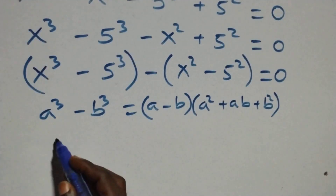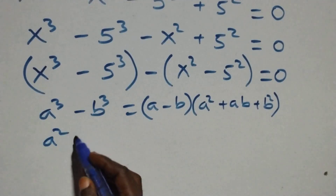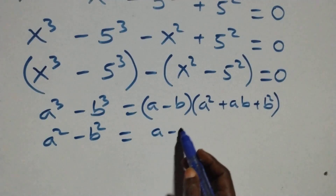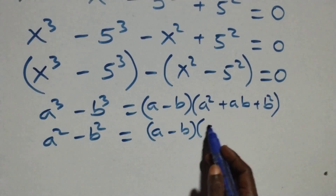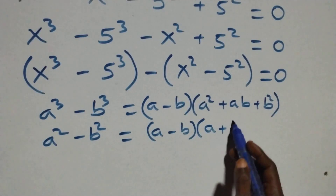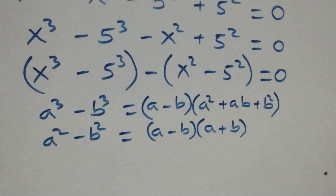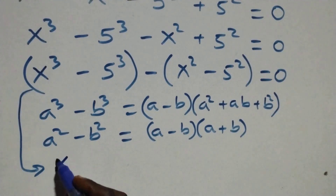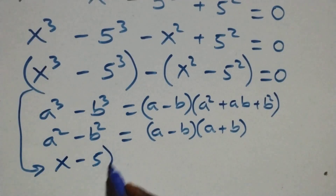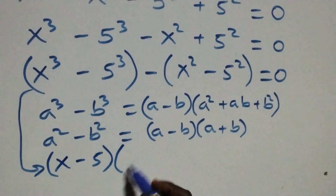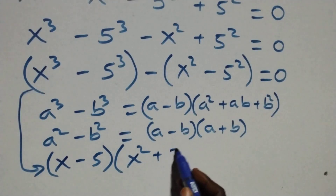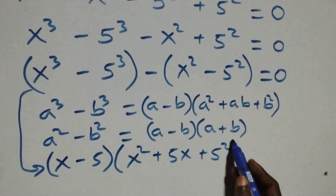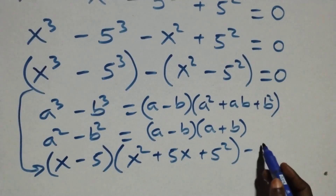And the second bracket also follows: a squared minus b squared is the same as (a minus b)(a plus b). Then we apply this to the equation and what we have becomes (x minus 5)(x squared plus 5x plus 5 squared) minus (x minus 5)(x plus 5), then equals to 0 here.